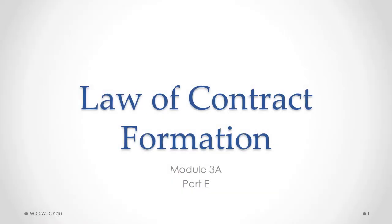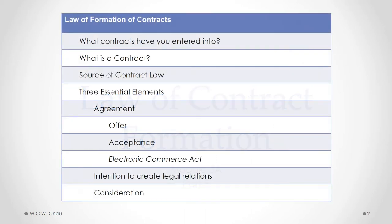This is Waylon Chow, and this is Law of Contract Formation, Module 3A, Part E. In this part, we will look at the second essential element of a valid contract, which is the intention to create legal relations.